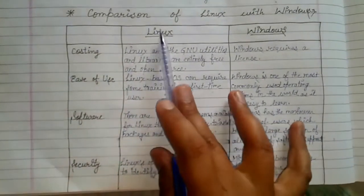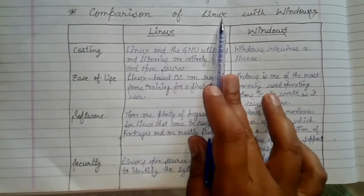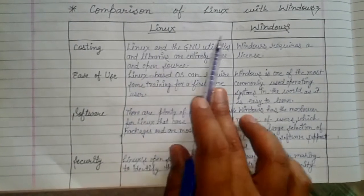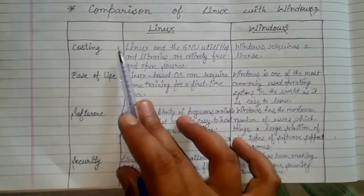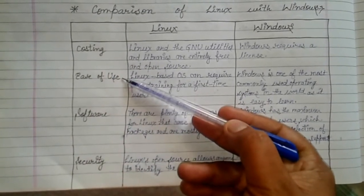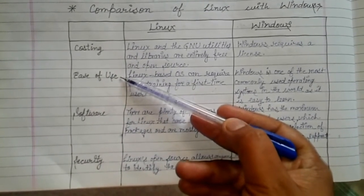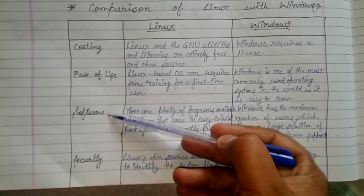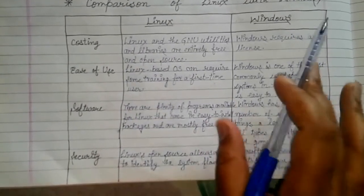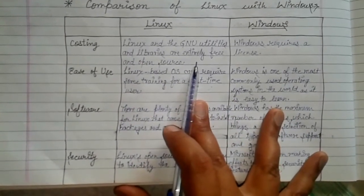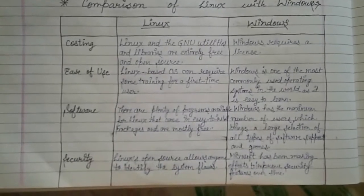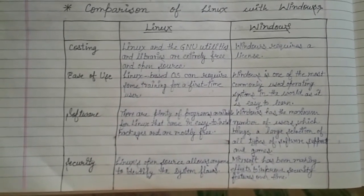Next is a comparison of Linux with Windows. I have drawn a table with four points: costing, ease of use, software, and security. Under these points, Linux and Windows are differentiated from each other. You can pause the video and read them carefully.